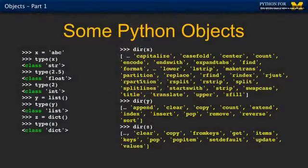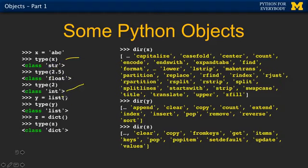We've been playing with these objects all along. We have a string object, and when we print this type thing out, now we're going to understand a little bit more. That basically says that x is an object of type class — the class string. This is an instance of the string class. This is an instance of the float class. This is an instance of the integer class. We make a list — what is it? This is an instance of the list class. Type z is a dictionary — that's a class. These are all the classes; those are the templates. You can have many strings, many instances.